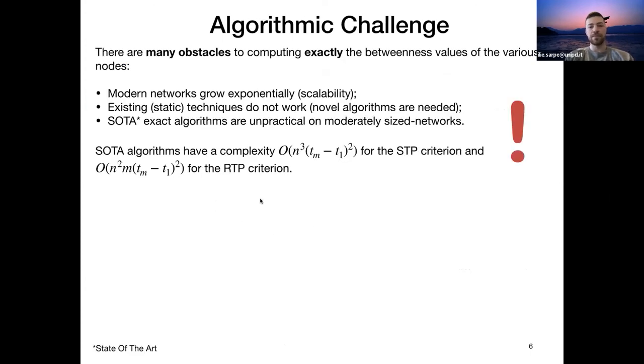Unfortunately, algorithmically, this is a very challenging task. Computing the temporal betweenness centrality of the different nodes has many challenges given, for example, the scalability required by the algorithms, given that modern networks are very large. Additionally, existing techniques for static networks cannot be easily adapted to work on temporal networks. And the fact that state-of-the-art algorithms have often impractical complexity, even on moderately large sized networks.